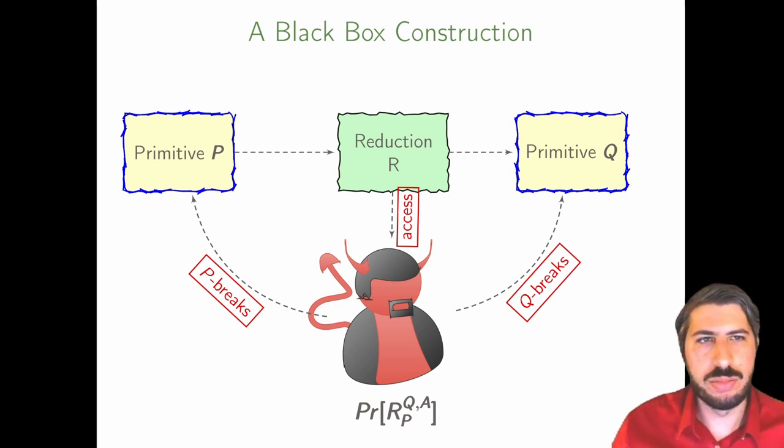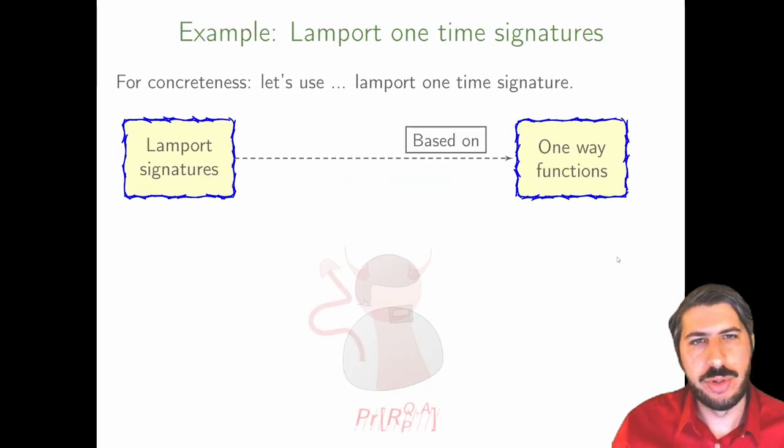What does that mean in practice? Let's work over a concrete example. For example, pick Lamport one-time signatures. The general idea is that the signer picks pairs of randomness and they utilize one-way functions to effectively commit to that randomness without disclosing it. Essentially, the public key.